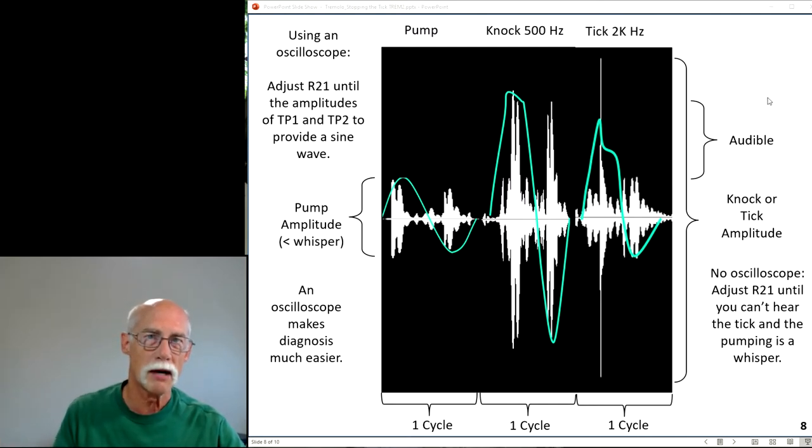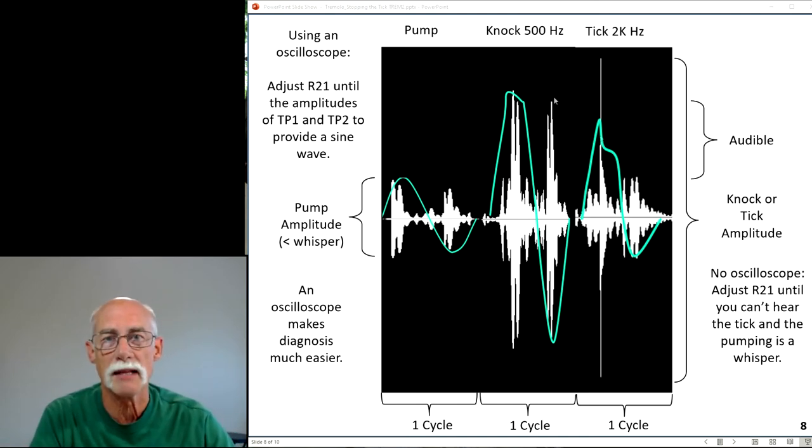If you don't have an oscilloscope, you can listen for these things. It should just be a whisper of a pump. But if you start hearing something, it's over-amplifying. Tremolo just makes a puffy sound—it putters and puffs. You won't hear anything. But if you're hearing something audible, just adjust R21 until you can't hear the tick or the knock. That's easy, so you can go either way with this.